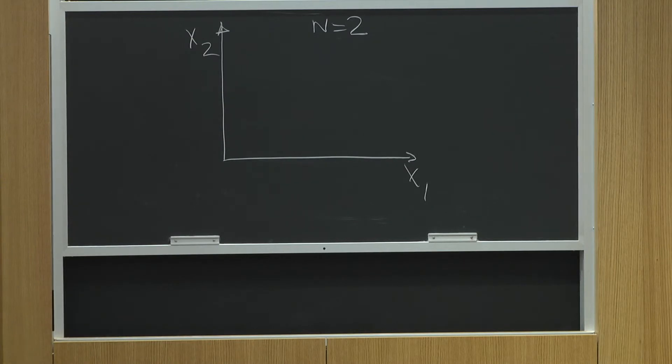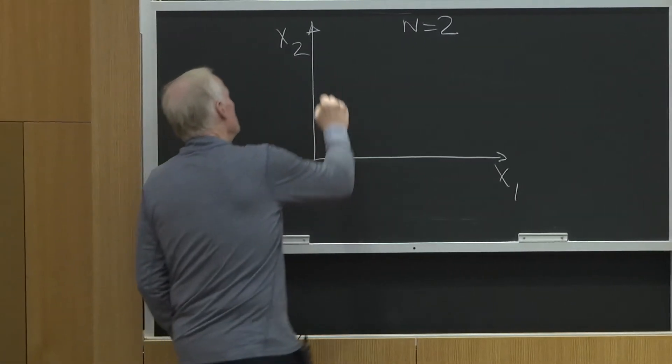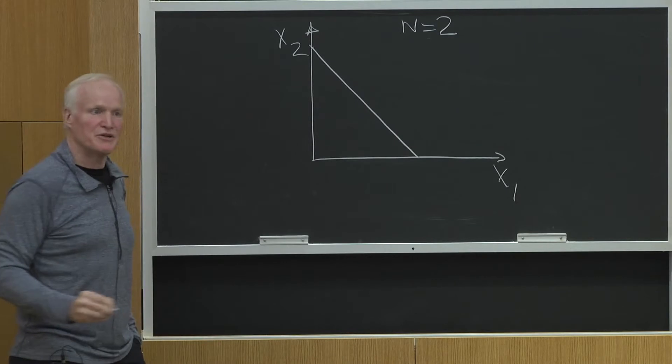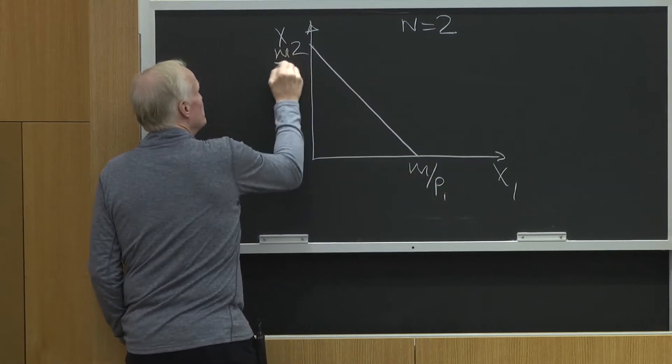My budget constraint in N equals 2 world looks like that. That's my budget constraint in N equals 2. This is M over P1. This is M over P2.